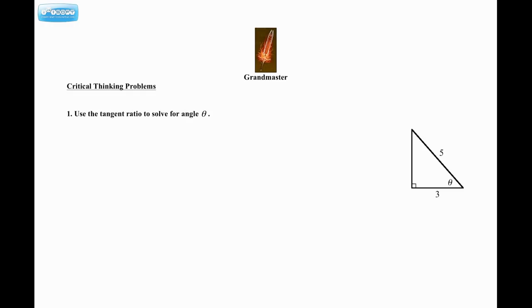Grandmaster, some critical thinking problems. Number one, it says use the tangent ratio to solve for angle theta. So here's my triangle. This is the angle I'm trying to determine. And if I want to use the tangent ratio, I need the opposite and the adjacent.